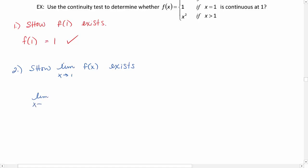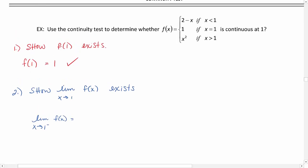We'll start with the limit as x approaches 1 from the left of f of x. So left side of 1 means less than 1, so we're going to be using our top function. This will be the limit as x approaches 1 from the left of 2 minus x, and we're just plugging 1 in for x here. We get 1.